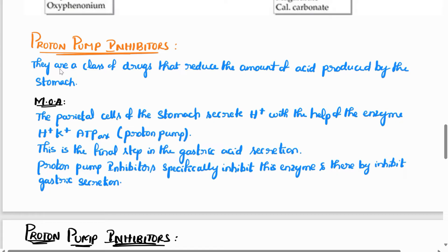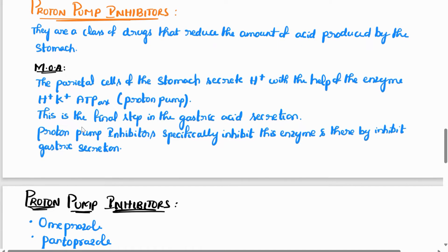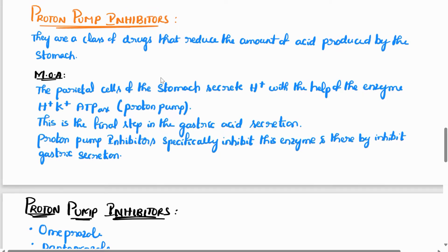We will cover introduction, definition, and mechanism of action for proton pump inhibitors. Parietal cells of the stomach secrete H+ ions with the help of the enzyme hydrogen-potassium ATPase — that is, hydrogen-potassium adenosine triphosphatase. This is the final step in gastric acid secretion. Proton pump inhibitors specifically inhibit this enzyme and thereby inhibit gastric acid secretion.